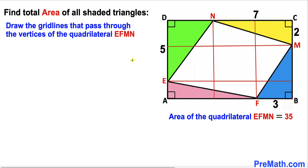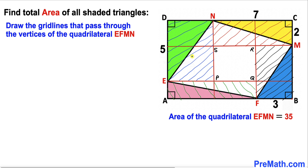Therefore we are going to draw the grid lines that pass through the vertices of quadrilateral EFMN. These are our vertices E, F, M, and N, and these are our grid lines. Moreover, these grid lines intersect each other at points P, Q, R, and S.